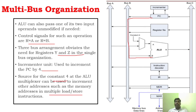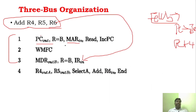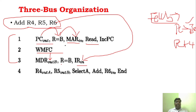From PC, using R equals B, it moves through the bus and reaches MAR. A read cycle is initiated and we wait until it completes. Once the read cycle completes, the data goes to MDR, and from MDR it goes to IR using R equals B. With the incrementer, we simply write increment PC to move to the next value — this completes the fetch phase, at the end of which the IR contains the instruction ADD R4, R5, R6.